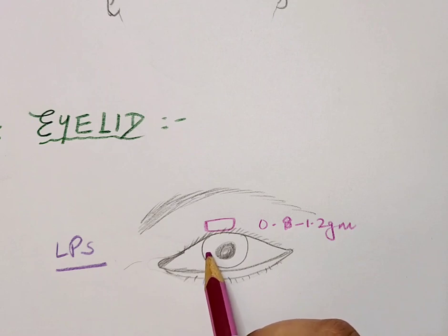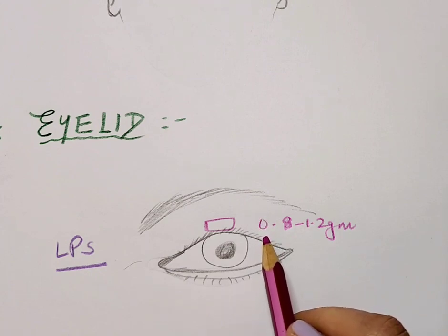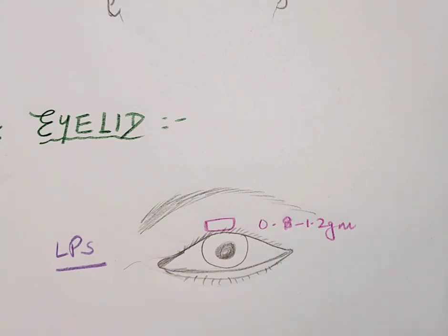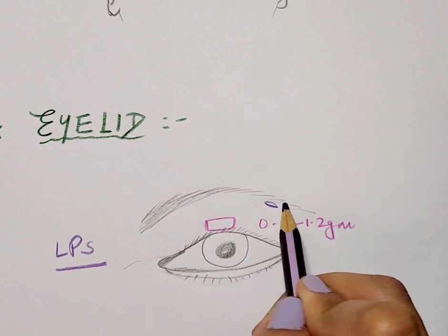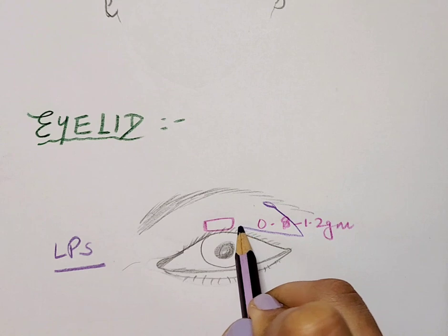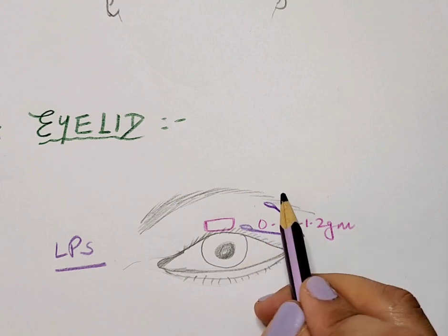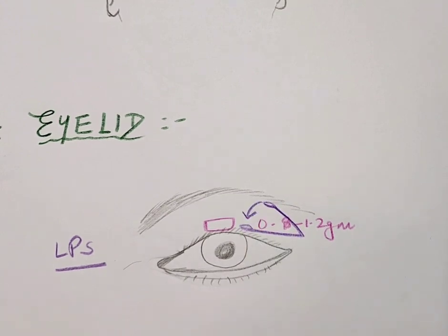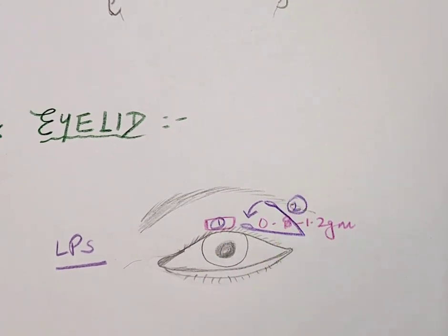The next option for the upper eyelid — mainly of academic interest — is insertion of a spring known as the Morel-Fatio spring. It is inserted just below the lateral end of the brow and extends to the region of the upper eyelid. It works via a spring mechanism: when the patient attempts to forcefully open the eye, the spring recoils and aids in closure of the upper eyelid.